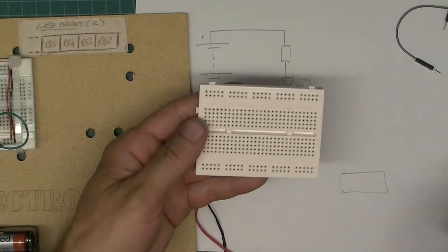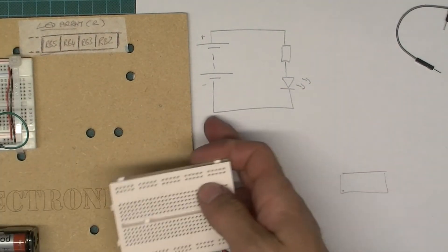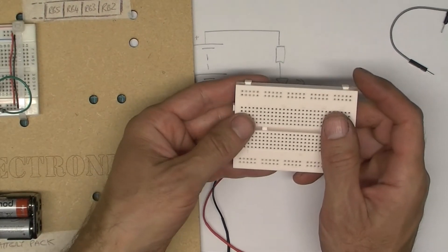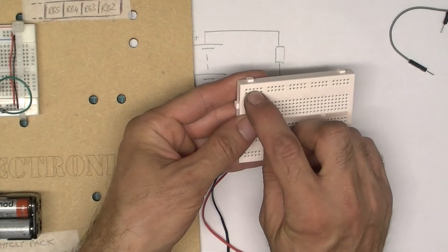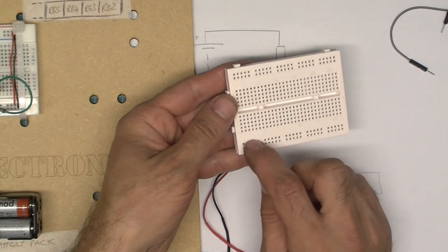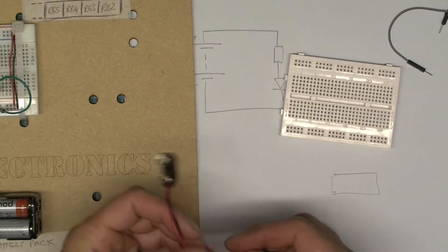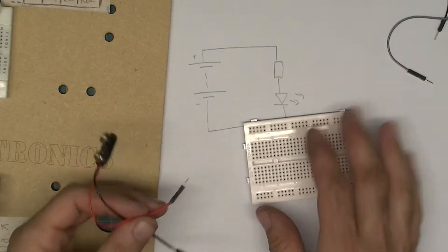GCSE students are more likely to use one of these, although you might have one of these. I'll show you both. This one has two rails going along there and then two rails going along there. If you were doing a very simple circuit, it really is up to you.